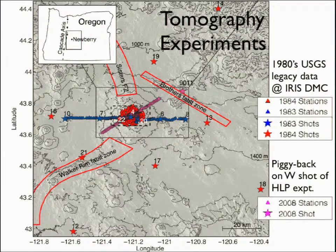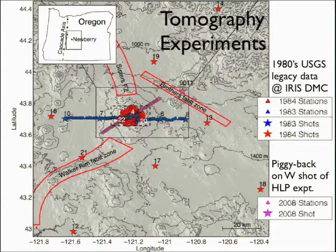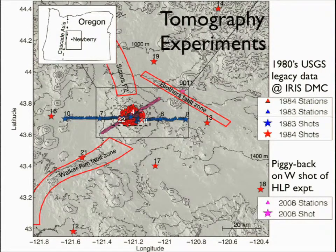We piggybacked on the western shot of the High Lava Plains experiment — our experiment is shown in pink on the map. You can see some of the geology; there are a number of fault zones that seem to intersect at Newbury. We were also able to use wonderful legacy datasets that the USGS collected in the 1980s that were archived in the IRIS DMC. Archiving this legacy data is really valuable. The red triangles and stars are an experiment with 110 instruments and about 16 shots, and there was a long refraction line shown in blue.